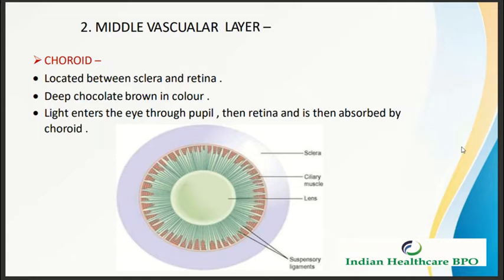The choroid is located between the sclera and the retina, and it is part of the middle vascular layer. It is deep chocolate brown in color. Light enters the eye through the pupil, then reaches the retina and is then absorbed by the choroid.